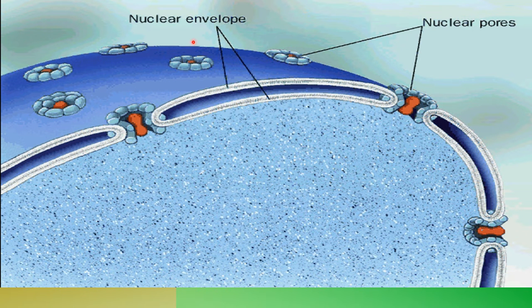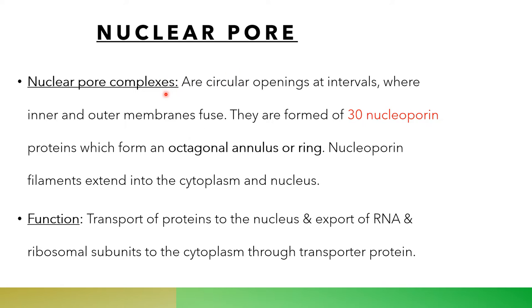This is a diagrammatic picture showing the nuclear membrane formed of two layers fused at intervals to form the nuclear pore. The nuclear pore complex is a circular opening where the inner and outer membranes fuse together. It is formed of 30 nuclear proteins forming an octagonal annulus — a ring formed of eight components. Nuclear protein filaments extend into the cytoplasm and the nucleus, allowing passage of particles from inside to outside the nucleus and vice versa.